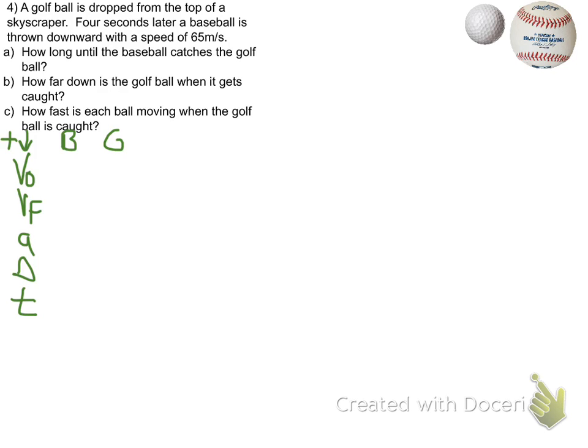We've got a column for our baseball and a column for our golf ball. The golf ball is dropped, so that means the initial velocity of the golf ball is zero. The baseball is thrown downward, we said down is positive, so that's 65 meters per second for the initial velocity of the baseball.